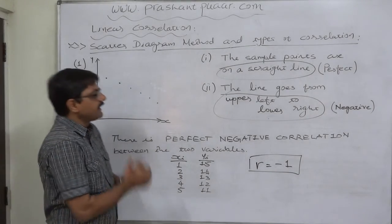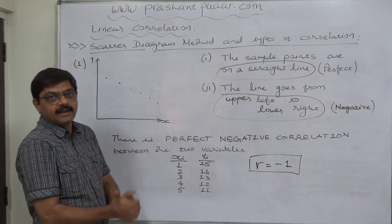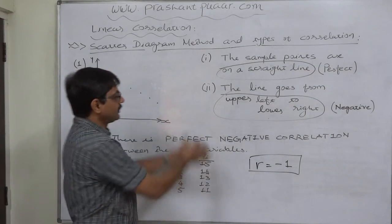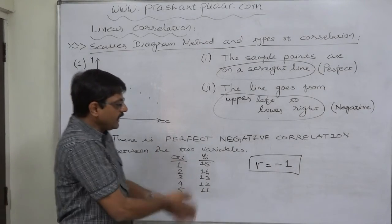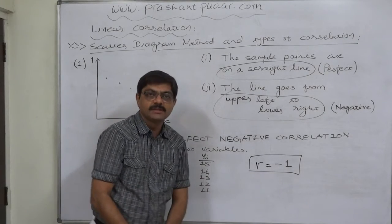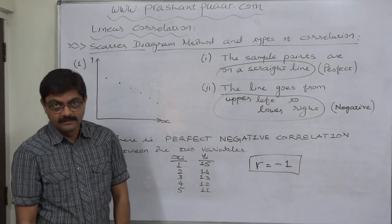If we calculate the coefficient of correlation for this type of data, we get the value of coefficient of correlation exactly minus or negative one. Thank you very much.